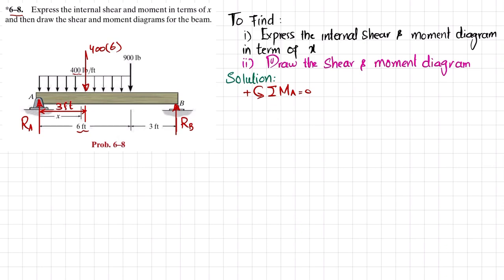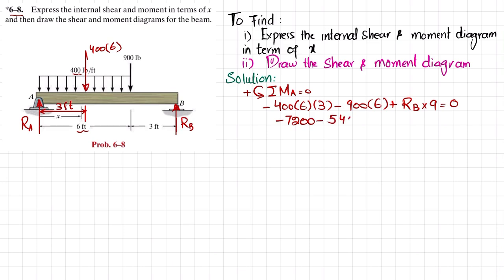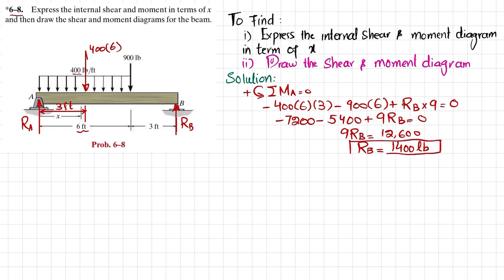Writing the equation: −(400 × 6 × 3) − (900 × 6) + Rb × 9 = 0, which gives −7200 − 5400 + 9·Rb = 0, so 9·Rb = 12600, and dividing both sides by 9 gives Rb = 1400 pounds.